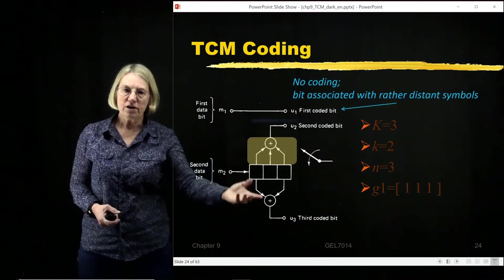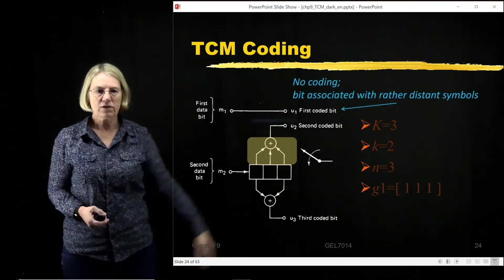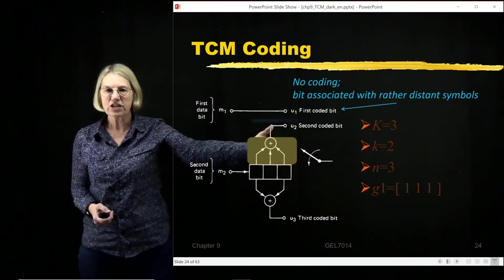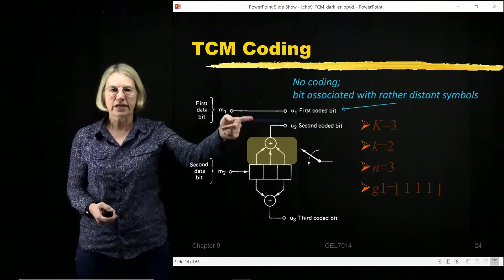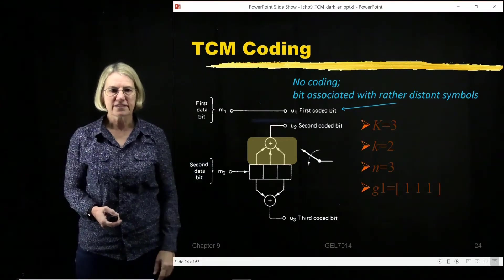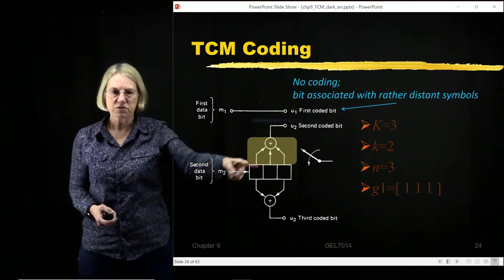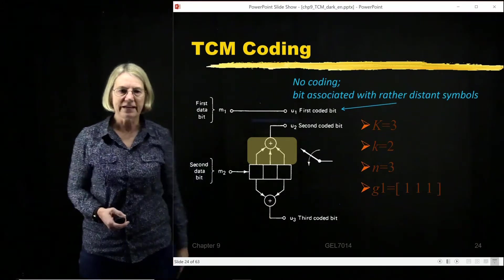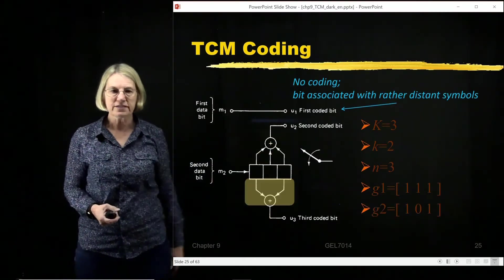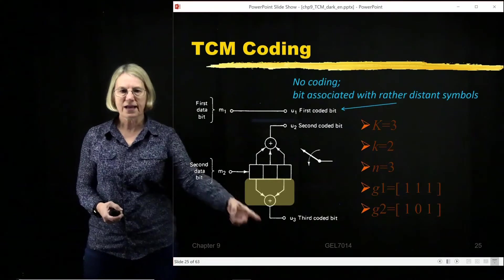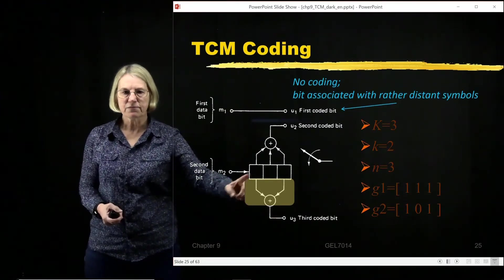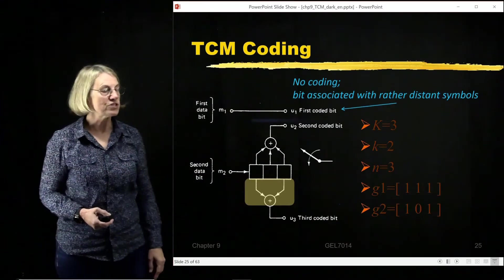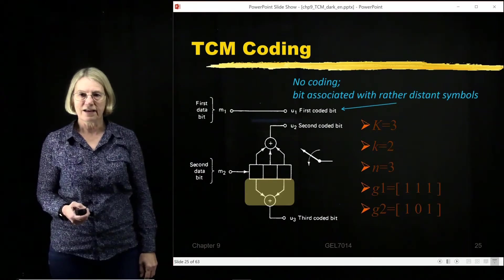Of course, this encoder I can always define with the vector, the generating vector for each one of the code bits. For instance, this code bit comes from doing the binary addition of all of the register entries. And the second coded bit comes from taking the first and the third register and doing the binary sum.